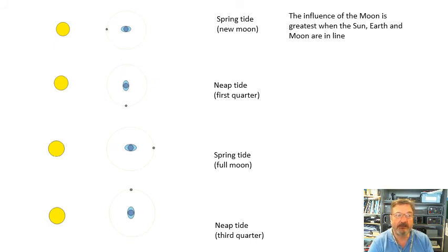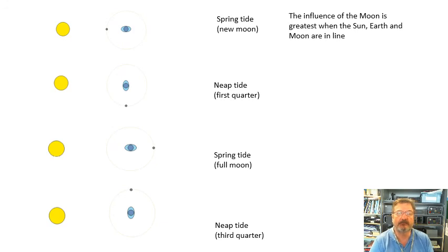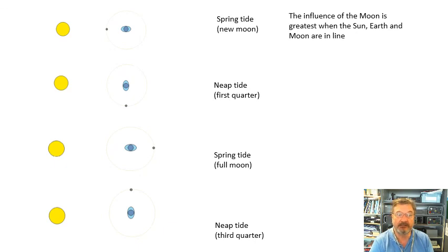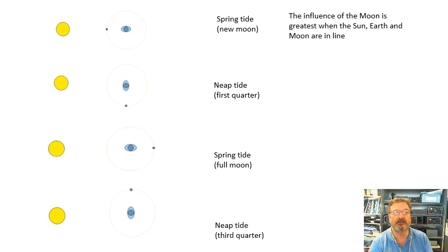In the third diagram we're back to a spring tide. The gravitational effects of the sun and moon are adding together — even though they're in opposite directions — to produce the tide. So when there's a full moon, you also get a spring tide. The last diagram shows the third quarter, giving a neap tide. To summarise: spring tides occur at new moon and full moon, when the Earth, moon, and sun are in a line. Neap tides occur when the moon is at right angles to the sun, corresponding to first quarter and third quarter.